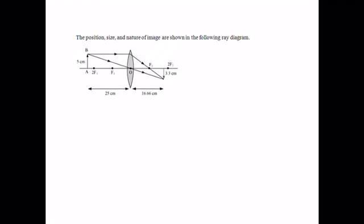First ray parallel to principal axis, it will pass through focus secondary. Ray through optical center, it will go straight and meet at a point in between F2 and 2F2. That is the formation of image.